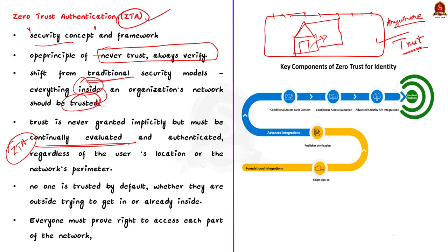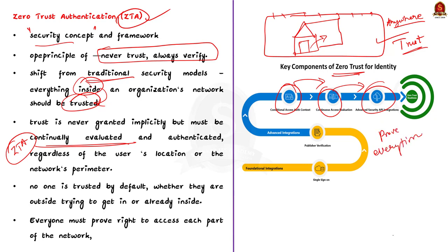Zero trust authentication (ZTA) changes the game. It's like having a guard inside your house who checks your ID card every time you want to enter a new room, even if you are just going from the kitchen to the living room. It doesn't matter that you are already inside the house — you need to prove you're allowed to be there every single time you move. That is all about zero trust authentication.